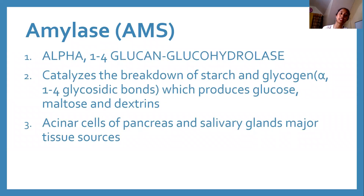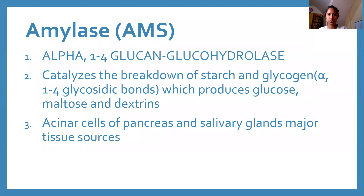First is amylase. Its full name is alpha-1,4-glucan-glucohydrolase. The alpha-1,4 in the name represents the glycosidic bonds that it breaks down. Substances which usually have glucose with alpha-1,4-glycosidic bonds are named amylose. Therefore, the enzymes that break down amylose are called amylases.